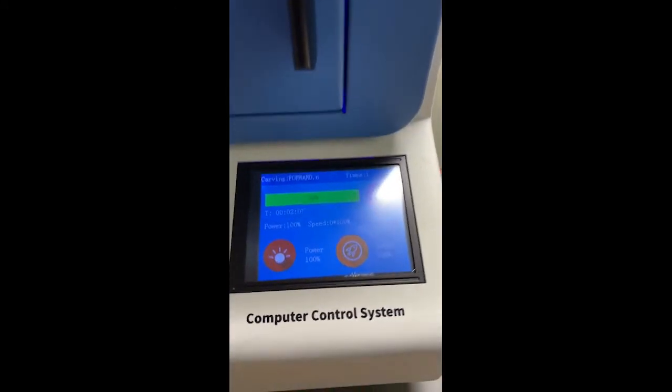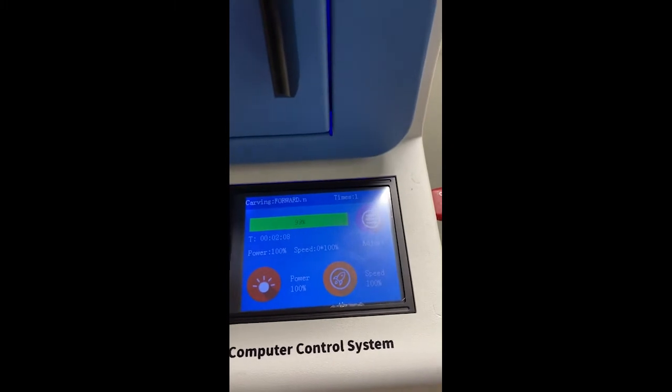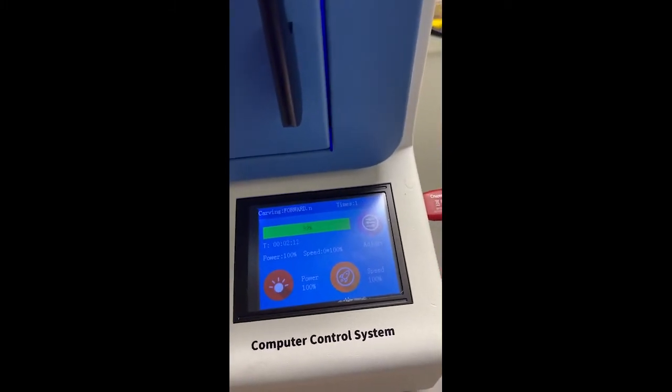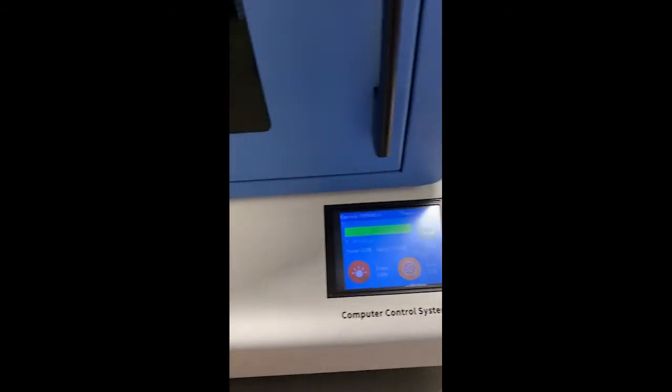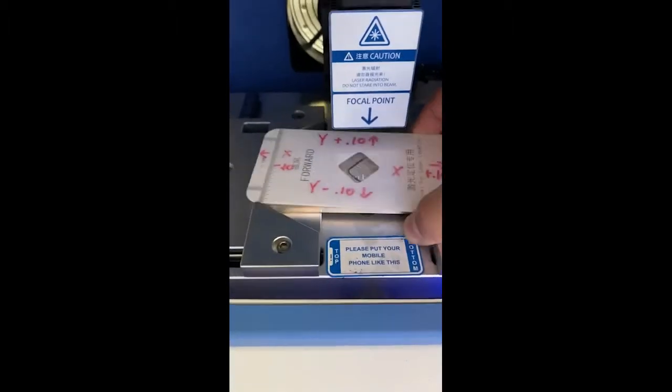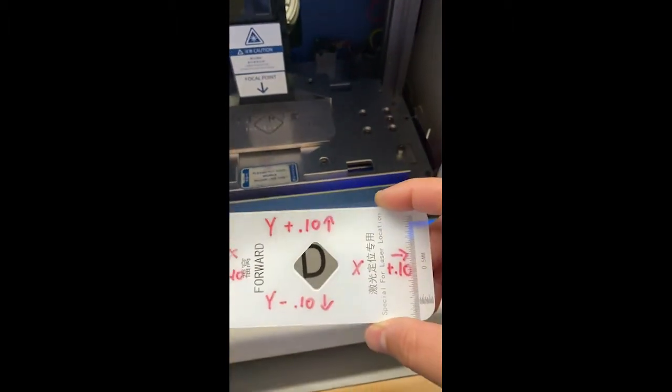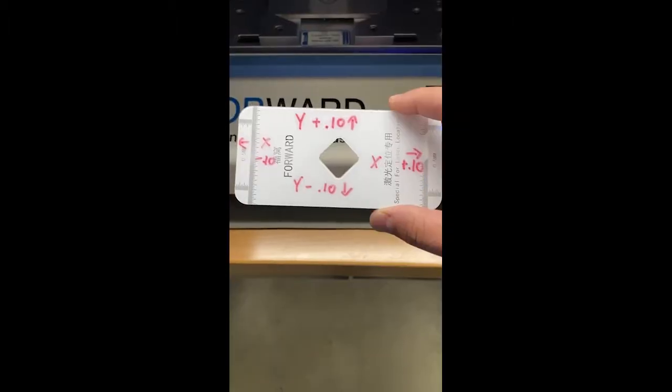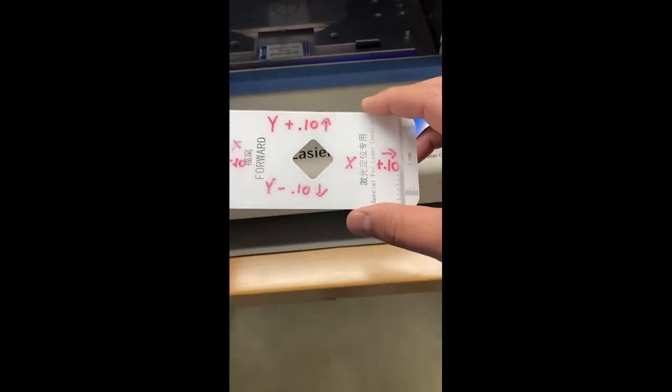It's doing the diamond now. There we go. So once it says a hundred percent, we're going to hit back, hit unlock just as the screen's open. It takes this out and it did nothing.